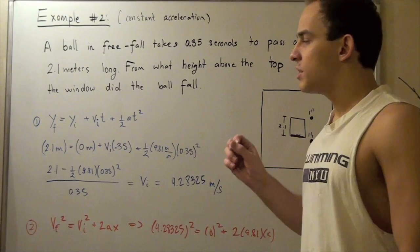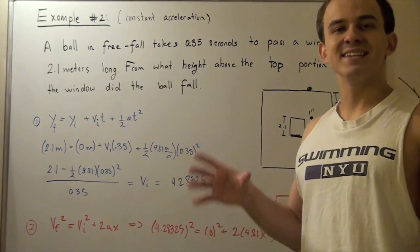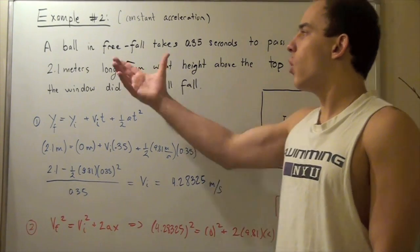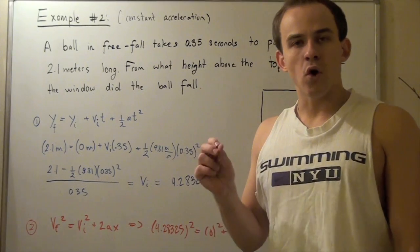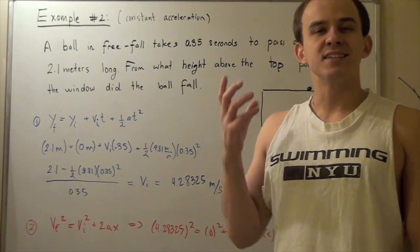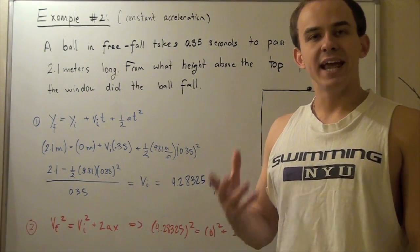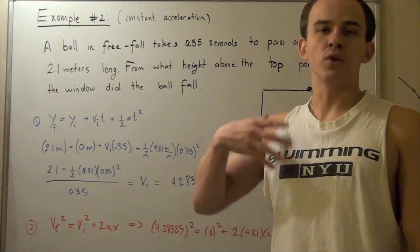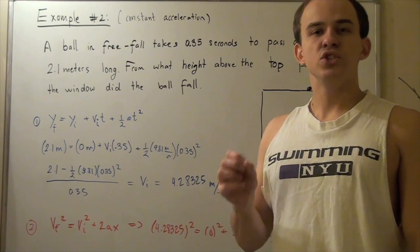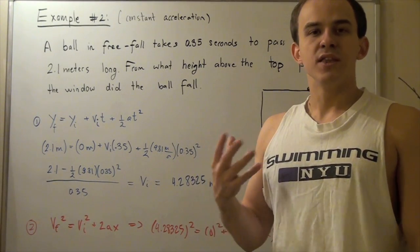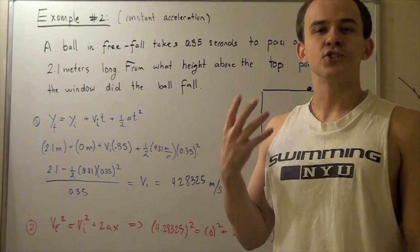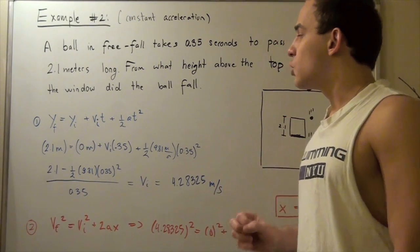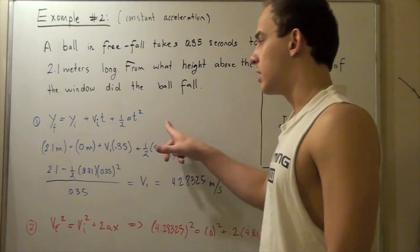First, recall that our acceleration in this case is constant. Whenever an object such as a ball is in free fall, it's accelerating at 9.81 meters per second squared. This acceleration is due to the gravitational pull that the Earth exerts on any object in free fall.